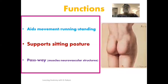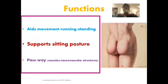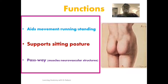The gluteal region also creates a pathway for muscles and neurovascular structures. A number of muscles and neurovascular structures pass through the gluteal region, though they are not positioned within the space permanently — they only use it as a pathway to reach their destinations. As we go through this lecture, we will be highlighting this interesting path through which some muscles and neurovascular structures run within the gluteal region.